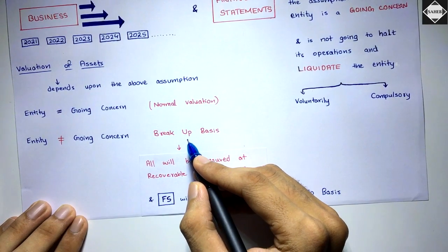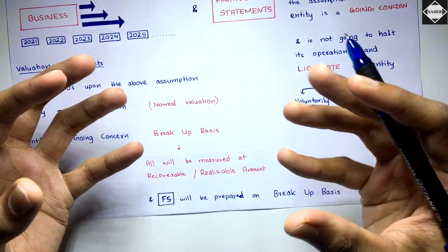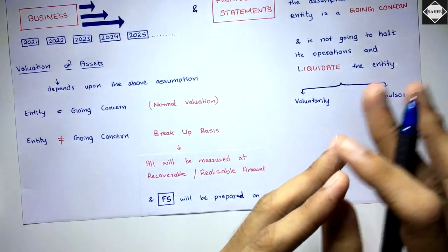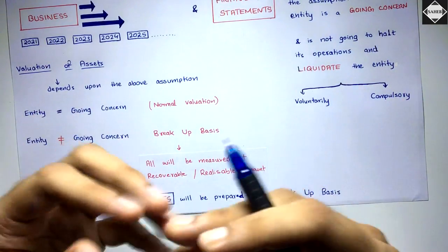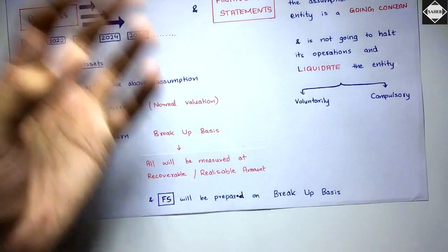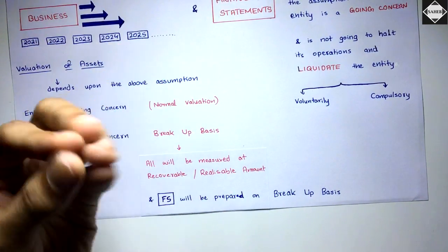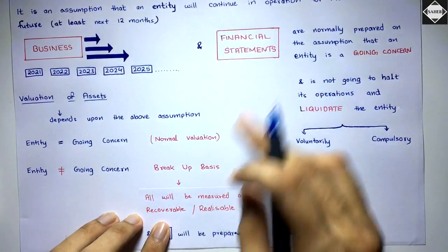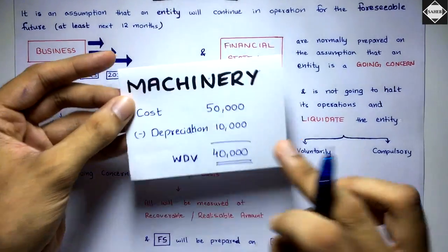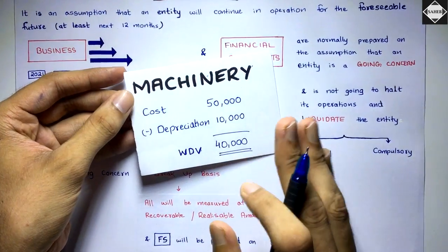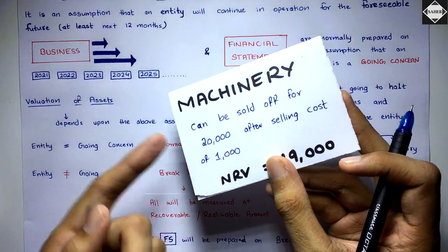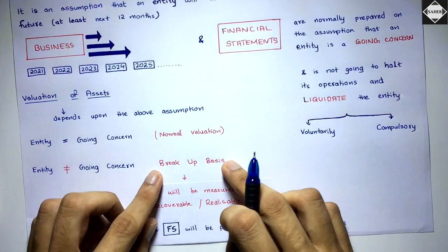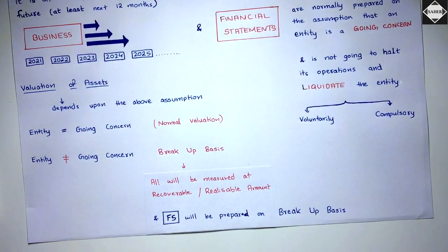Breakup basis means you are breaking up your business and selling off all its components — assets — part by part, then paying off all liabilities; you are liquidating and shutting down the company legally. You sell all assets at their recoverable or net realizable values, not at the book values in the financial statements. You cannot sell your machinery at 50,000 or 40,000 — only at whatever you can fetch in the market right now.